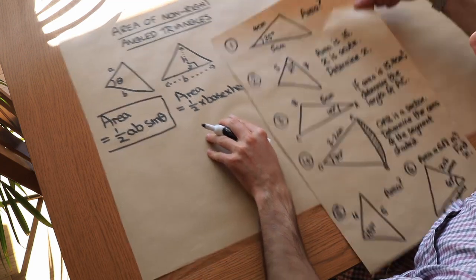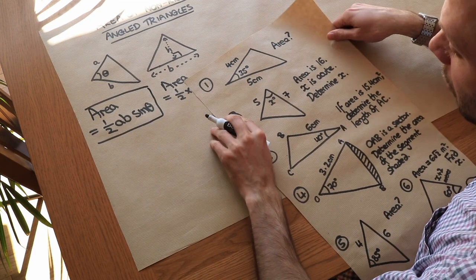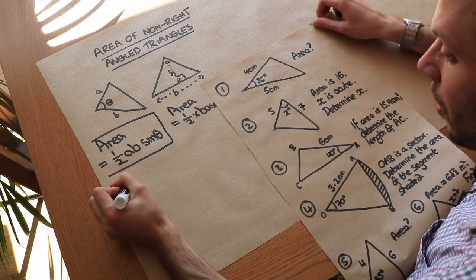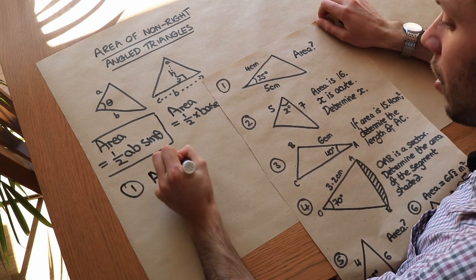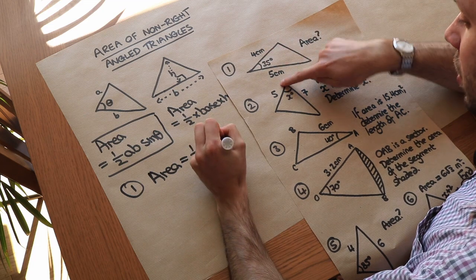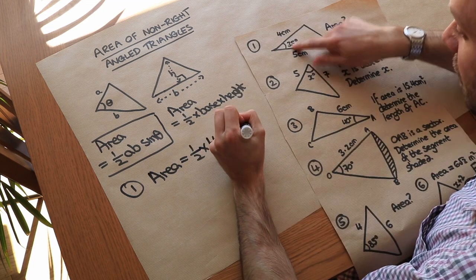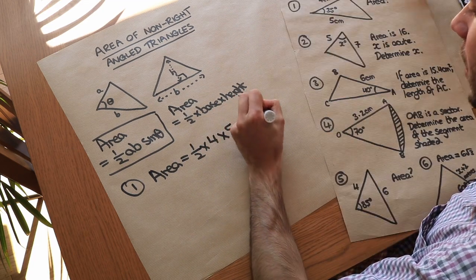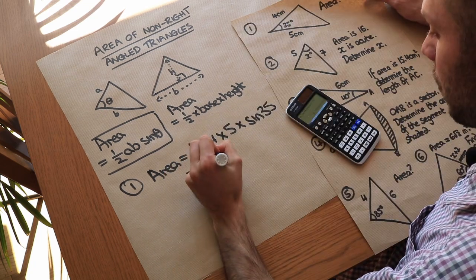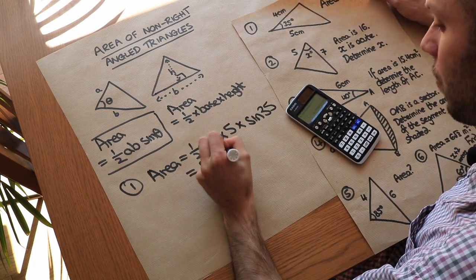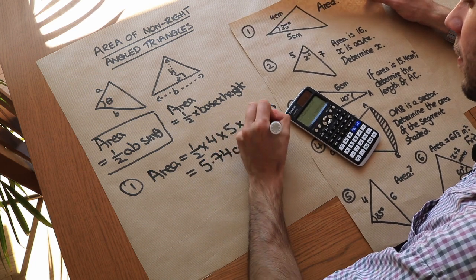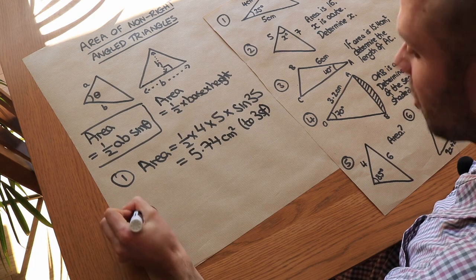For the first question, we have two sides and the angle between them, so we just do half times four times five times the sine of the angle between them, and we get 5.74 centimetres squared to three significant figures.